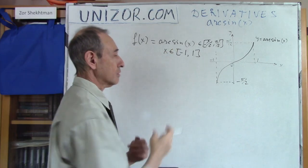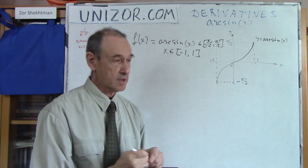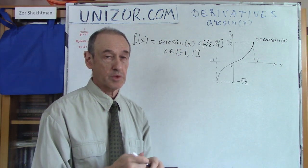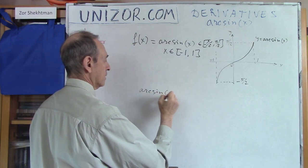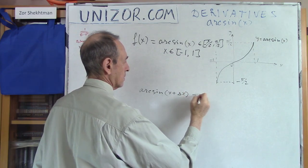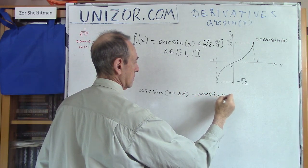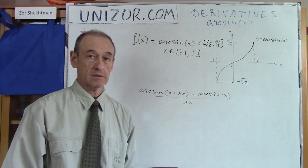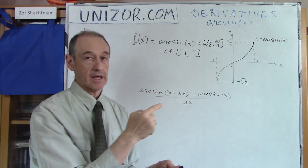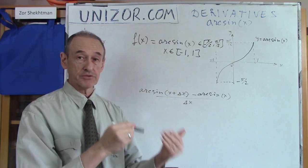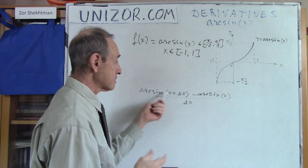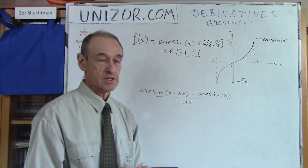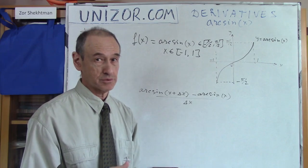Now, here, unfortunately, we cannot do something in this particular way, because if I do increment arcsin(x + Δx), it's kind of difficult to deal with. Just think about how would you deal with this. I have no idea how to deal with arcsin(x + Δx). When it was sin(x + Δx), I know what is the sine of the sum of two angles. There is some kind of a formula I was using. There is no formula for this. So the whole method of direct calculation of the derivative might not really work here. At least, I don't know how to do it.